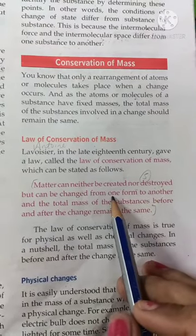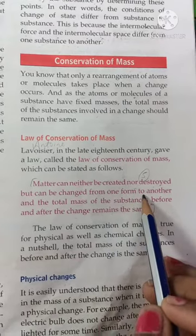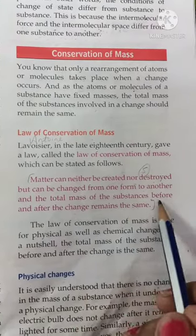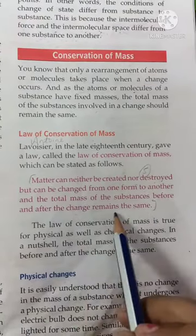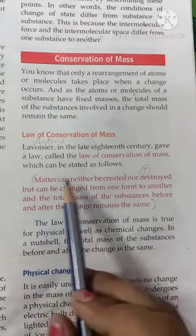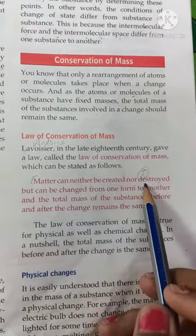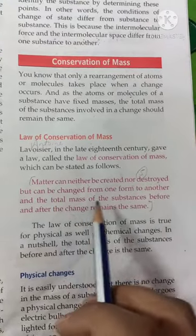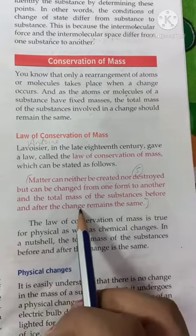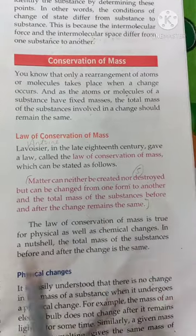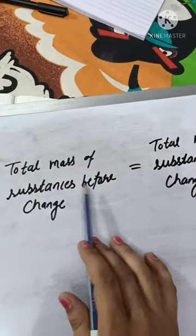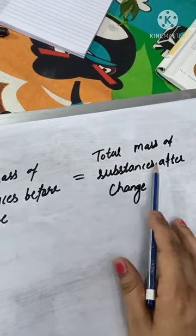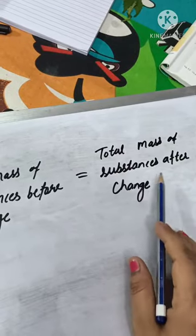For example, we can change paper into ash by burning. The total mass of the substances before and after the change remains the same. That is, the total mass of substances before change equals the total mass of substances after change.